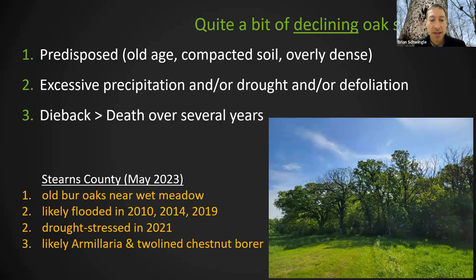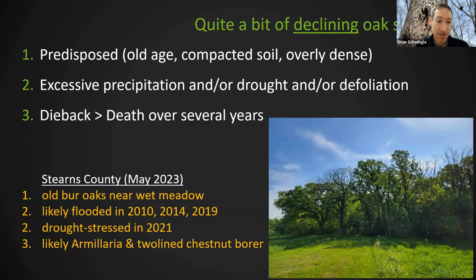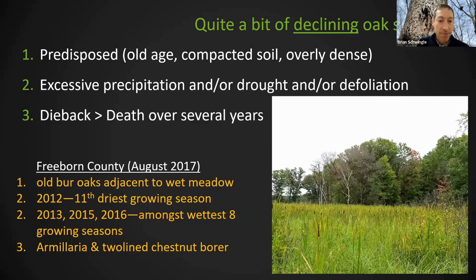Here's a picture from Stearns County this past May — a perfect example of oak decline. These are old bur oaks growing adjacent to open water or a wet meadow full of cattails. They were likely flooded in 2010, 2014, and 2019, as those years were among the top 10 wettest years in Stearns County. They were severely drought-stressed in 2021 and are almost certainly dying because of armillaria and two-lined chestnut borer. It's much easier to just say: you're seeing oak decline here.